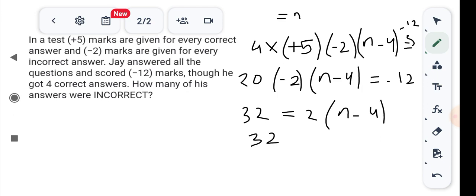32 equals to 2N minus 2 times 4 minus 8, 40 equals to 2N. N equals to 20. N equals to 20.